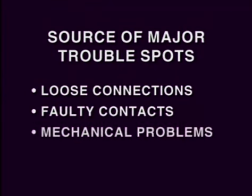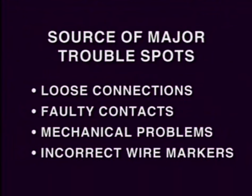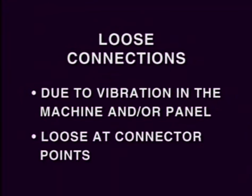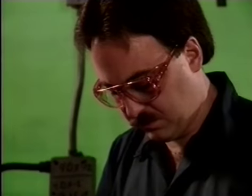Another type of troubleshooting deals with the control circuit operation and the field components that form these circuits. The source of major trouble spots in this case are loose connections, faulty contacts, and mechanical problems. Another problem which could hamper your troubleshooting may involve the use of incorrect wire markers which detail what control element is connected to which terminal point. A loose connection problem generally occurs because of vibration in the machine and in the panel, thus making the connections loose at the terminal blocks and at connecting points of field devices such as a push button.